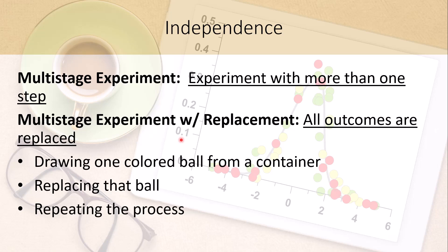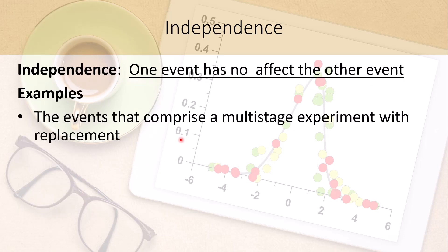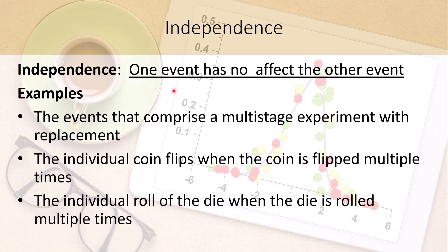When all outcomes remain the same at every stage, each event or each stage in that experiment is independent of every other stage — that is the notion of statistical independence. Independence basically means, in terms of probability, that one event has absolutely no effect on the other event. Any multi-stage experiment with replacement is an example, as are multiple coin flips and multiple die tosses.